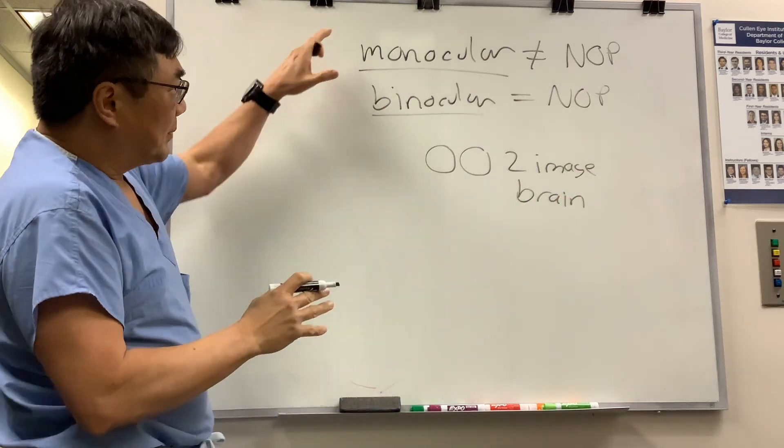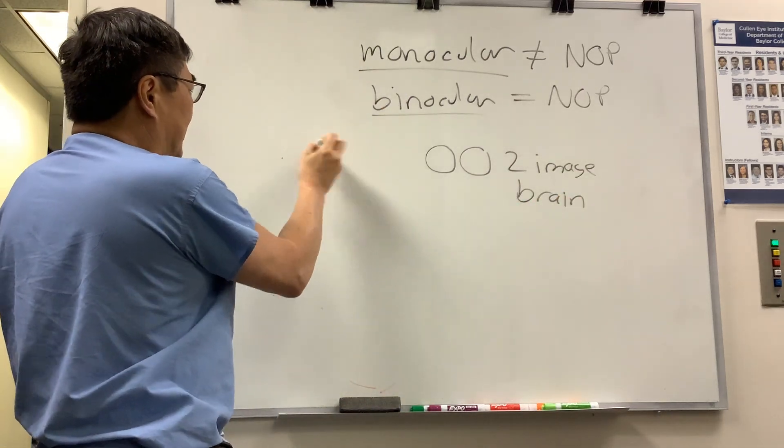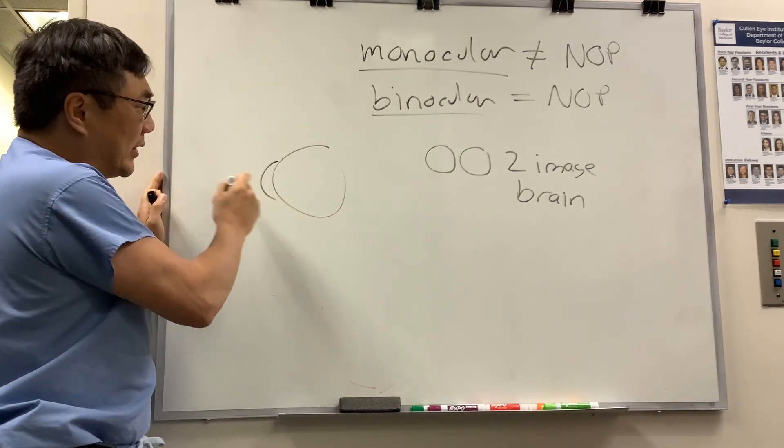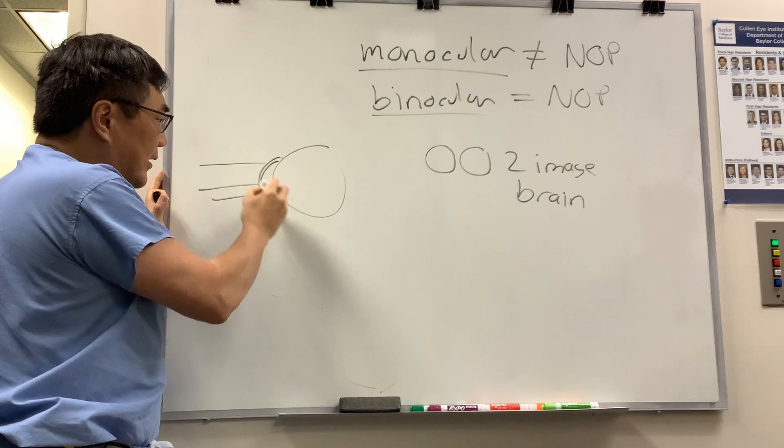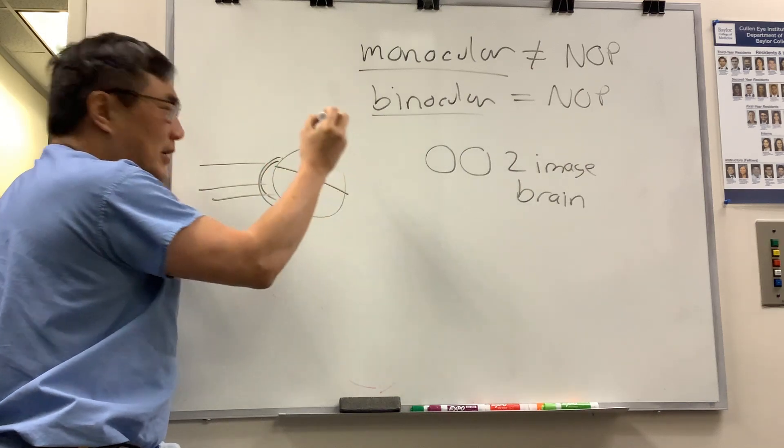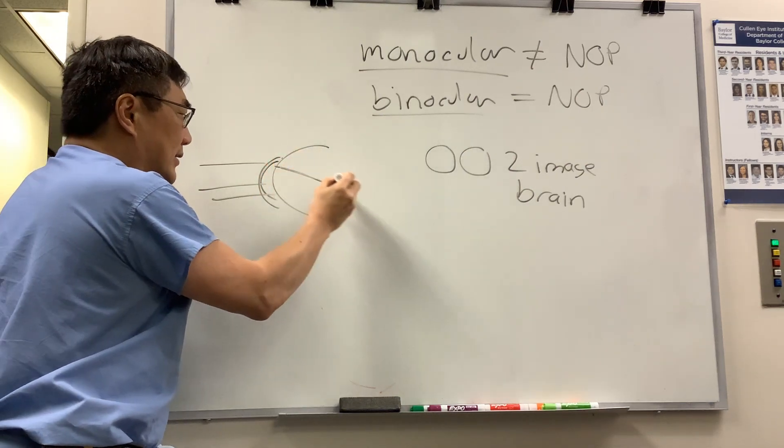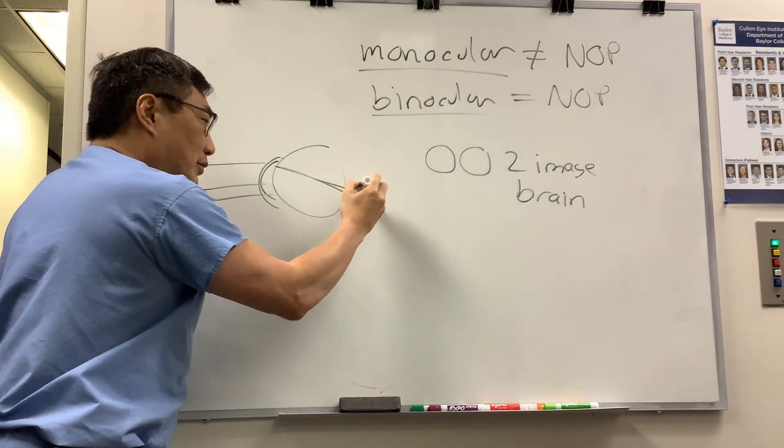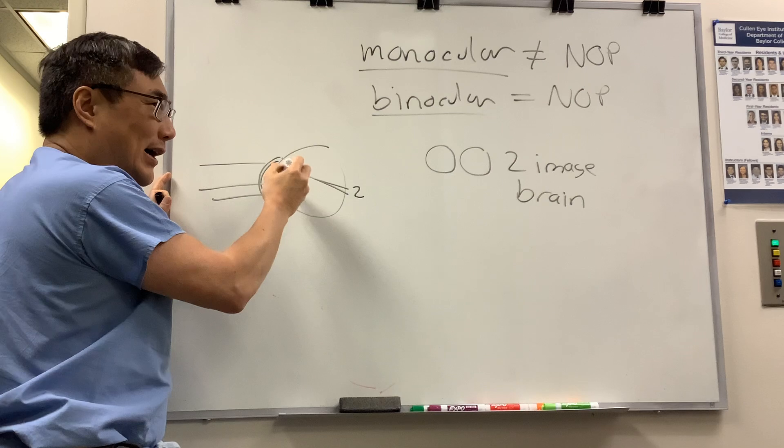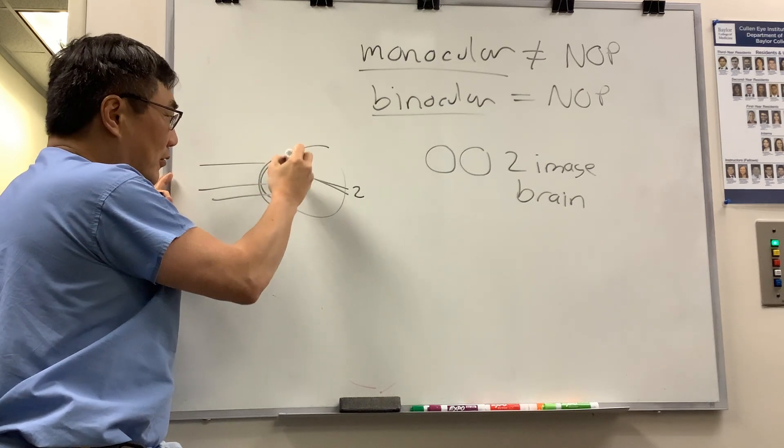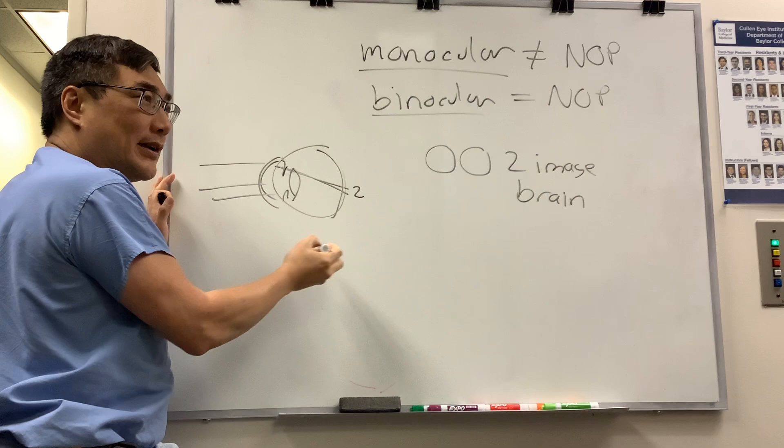The reason it's important is monocular diplopia is usually because of something wrong with the image refraction. It's not clear, and so you get one image here and one image over here. When you get those two images, they don't align, and you get monocular diplopia. That's usually from dry eye or cornea or maybe your lens or something wrong with your retina.